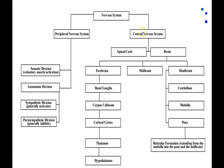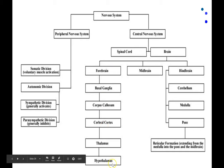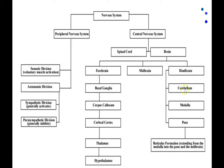The central nervous system consists of the brain and the spinal cord. The brain can be divided into three parts: forebrain, midbrain, and hindbrain. The forebrain consists of the basal ganglia, corpus callosum, cerebral cortex, thalamus, and hypothalamus — we'll talk more about the basal ganglia later in the context of movement. The hindbrain consists of the cerebellum, medulla, and pons.